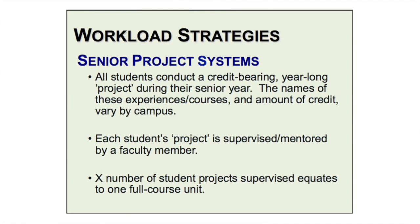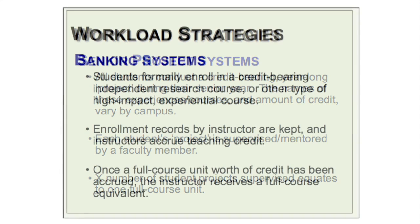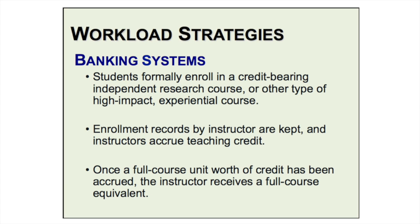The deliverable in an incentive system is typically a submitted grant proposal — trying to develop a culture around undergraduate research and bring in additional revenue through grant support. This is a good way to start, but it's not sustainable as the only model from my vantage point. In senior project systems, all students in the department — not just honors students — conduct some kind of credit-bearing, year-long project in their senior year. It becomes a departmental or institutional requirement; each student's project is supervised by a faculty member, and supervising a certain number of student projects equates to one full course unit.